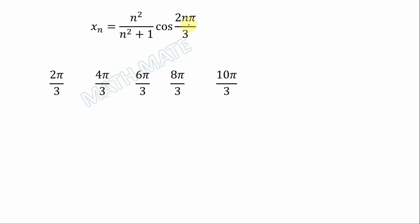First, let's look at which values the cosine multiplier gives. When n equals 1, that's 2π/3; when n equals 2, that's 4π/3, and so on.